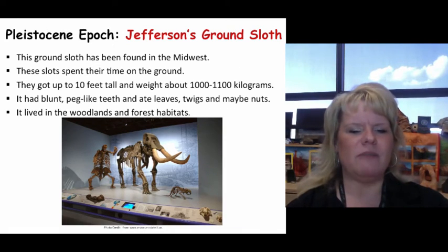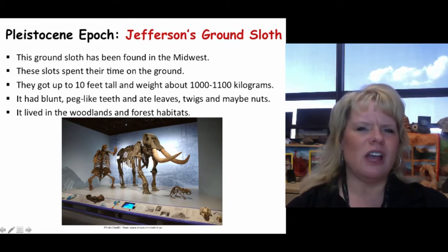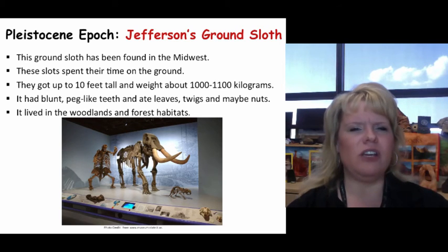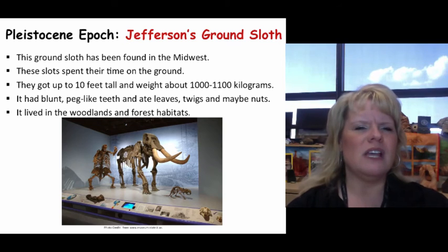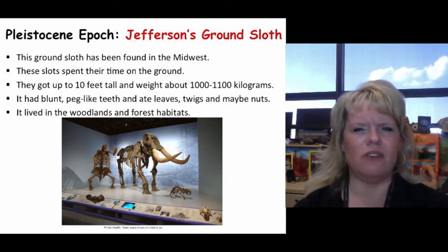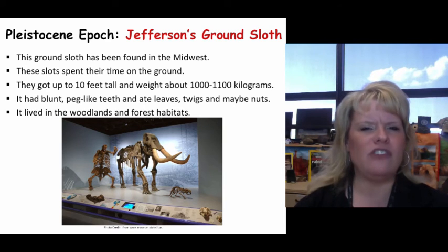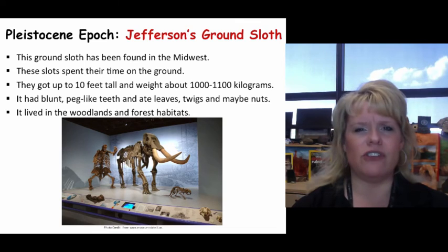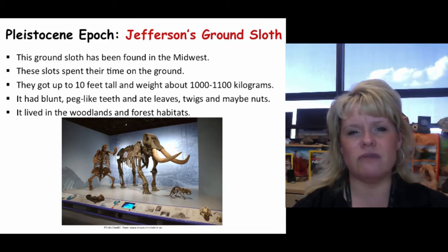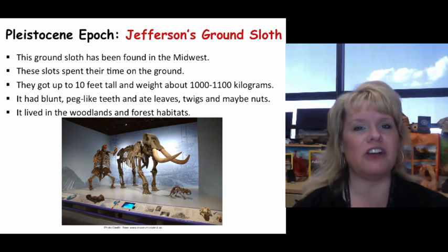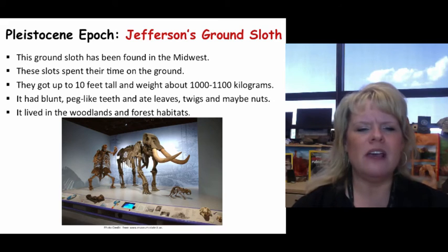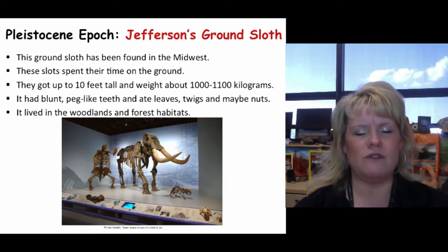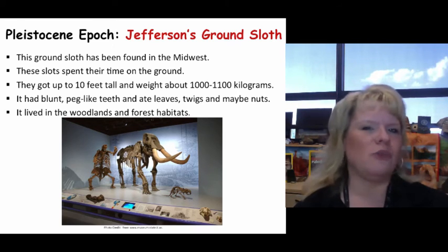Jefferson's ground sloth is a famous Pleistocene animal — it looks like a big bear, but it is not. Unlike modern sloths that spend their time in trees, these actually spent their time on the ground. They were big animals, getting up to about 10 feet tall and over 1,000 kilograms. Animals at the 1,000-kilogram marker were wiped out at 100% at the end of the ice age. They had interesting blunt peg-like teeth suited for eating leaves, twigs, and possibly nuts from the tops of trees, and they lived in woodlands and forested areas.